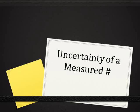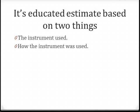Every measurement in a lab has to have some sort of uncertainty. We're going to talk about how you determine the amount of uncertainty for each measurement in your lab. The uncertainty of a measured quantity depends on two things: the instrument that you use and how you use that instrument. That's the key thing to remember each time.